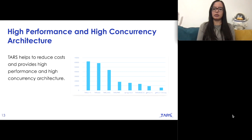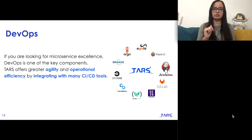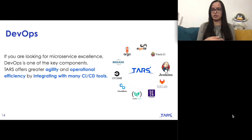We also ran some tests and found that TARS has a very high-performance and high-concurrency architecture. As you can see in this plot, we are comparing TARS across different programming languages and against Spring Cloud and gRPC, which are also two microservice frameworks. TARS C++ outperformed all the other frameworks.